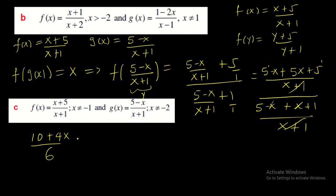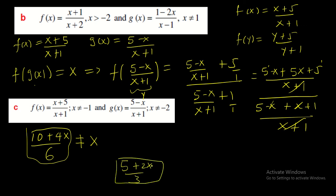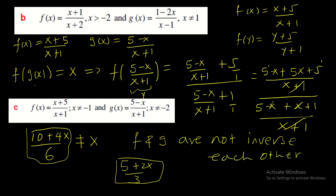This result is not equal to x — it is a linear expression. Simplifying by 2 gives (5 + 2x)/3, which is not the identity function x. Therefore f(g(x)) ≠ x, which means f and g are not inverses of each other. This contrasts with the previous examples where we did obtain x.